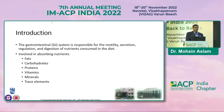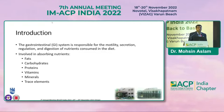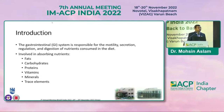The GI system is responsible for the motility, secretion, regulation, and digestion of nutrients consumed in the diet. The GI tract is involved in the absorption of fats, carbohydrates, proteins, vitamins, minerals, and trace elements. Any disruption in the absorption of these nutrients will result in GI symptoms, and if continued for long, results in malabsorption.